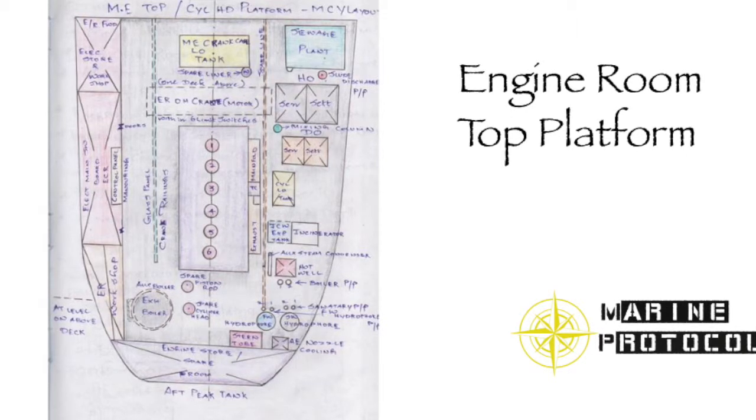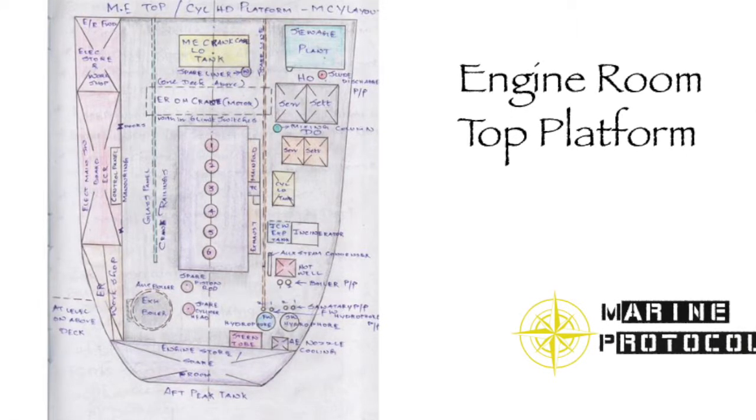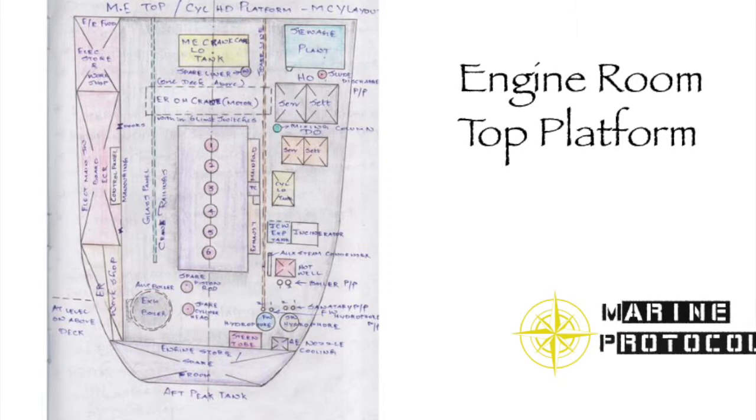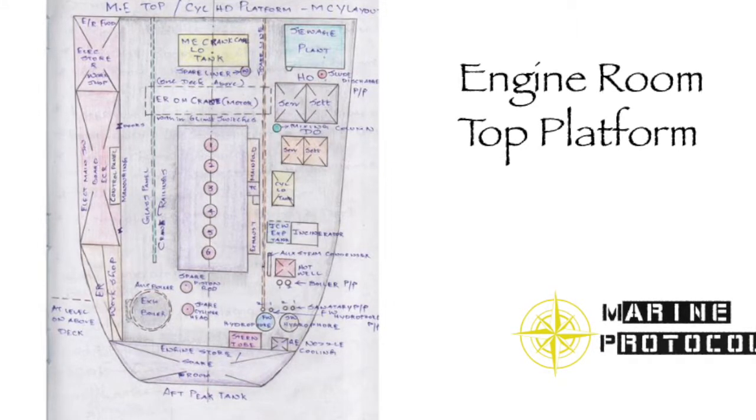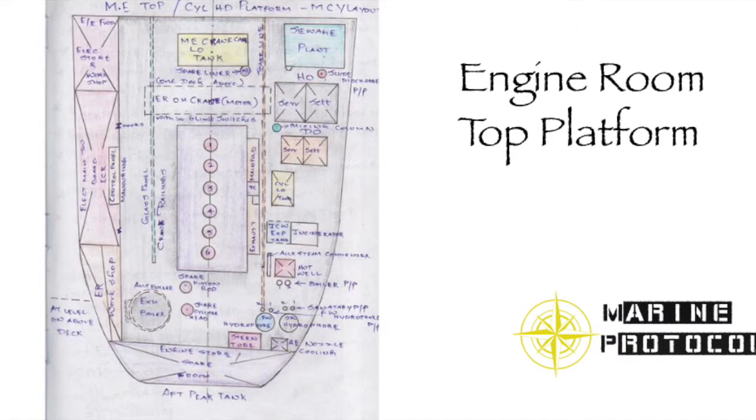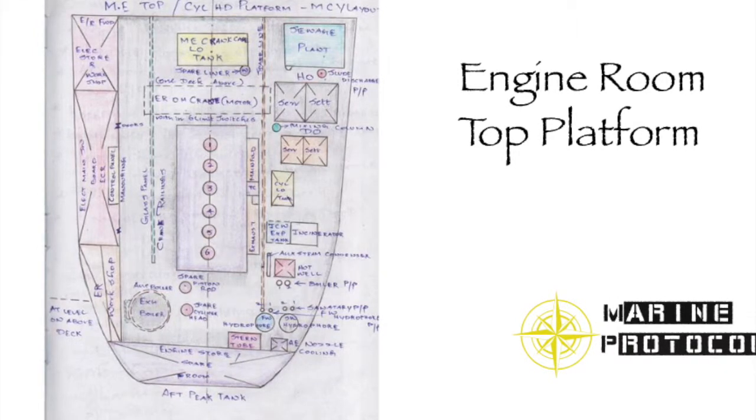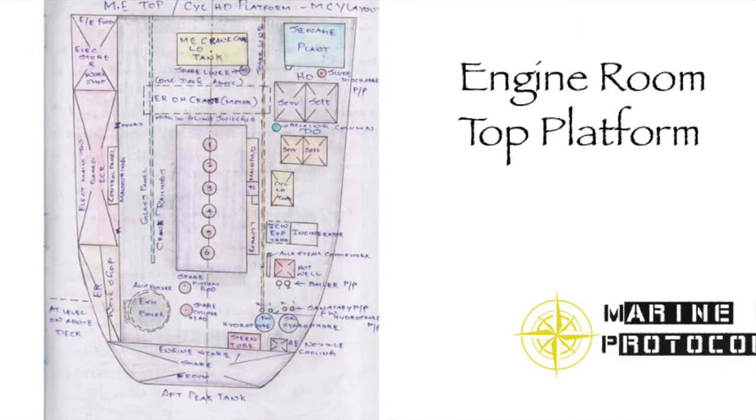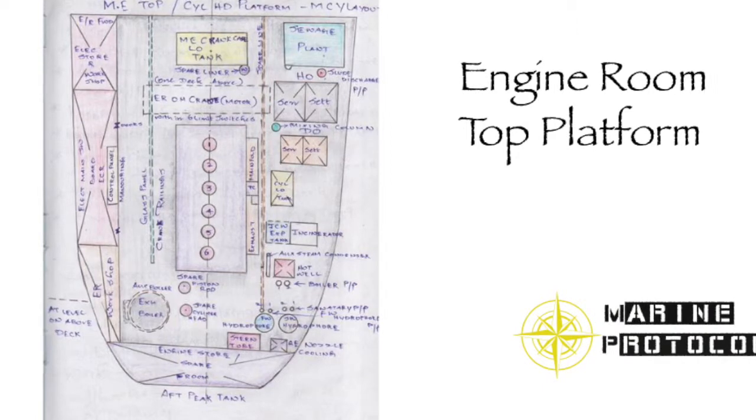Pumps: 1. Sanitary Hydrophore Pump, 2. Fresh Water Hydrophore Pump, 3. Sludge Discharge Pump. Auxiliary Machinery: 1. Exhaust Boiler, 2. Incinerator, 3. Sewage Plant, 4. Fresh Water Generator, 5. Sanitary Hydrophore, 6. Engine Room Overhead Crane, 7. Auxiliary Steam Condenser.